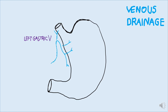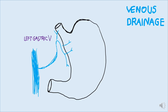The left gastric vein drains directly into the portal vein. All veins will eventually drain into this important vein — the portal vein — which takes the venous drainage to the liver. The right gastric vein drains the lower portion of the lesser curvature of the stomach and also drains into the portal vein.